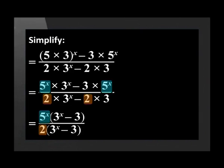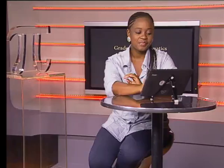And in the denominator, we have a common factor of 2. We now have a common bracket of 3 to the power x minus 3 in the numerator and denominator. So let's cancel them. When we cancel the brackets, we will be left with 5 to the power of x over 2.